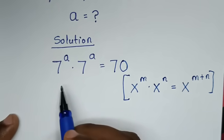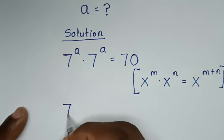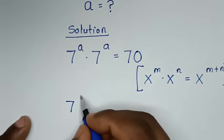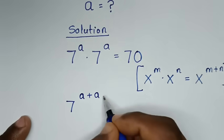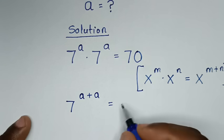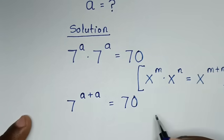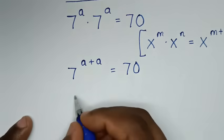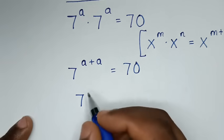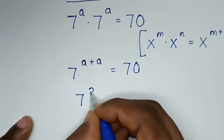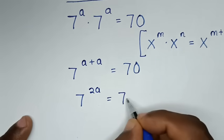Then it will be 7 power of A plus A. So A plus A gives us, in the next step, 7 power of 2A is equal to 70.